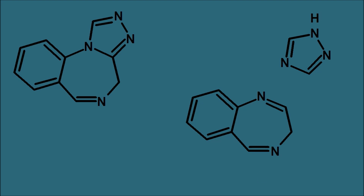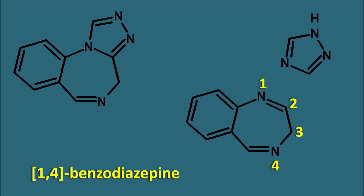Let us give numbering to the benzodiazepine ring: one, two, three, four — so this is a 1,4-benzodiazepine. This 1,4-benzodiazepine is fused with the five-membered ring system containing three nitrogens. Starting the numbering from nitrogen to give the least numbers to the nitrogens: one, two, three, four, five — the three nitrogens are at the first, second, and fourth positions. So this is the 1,2,4-triazole.